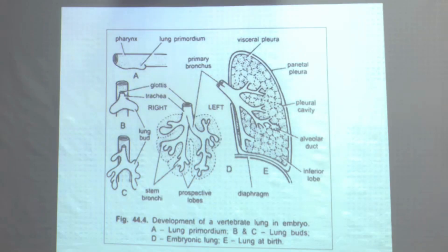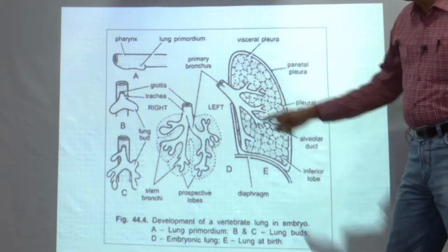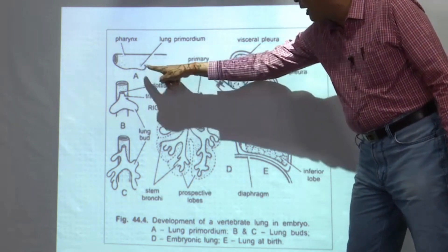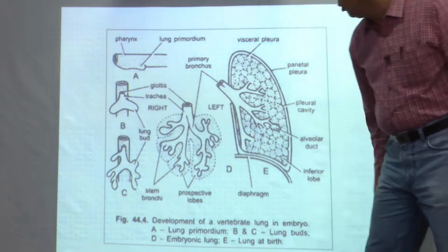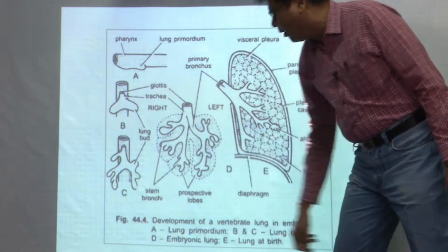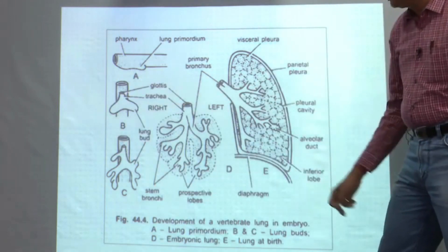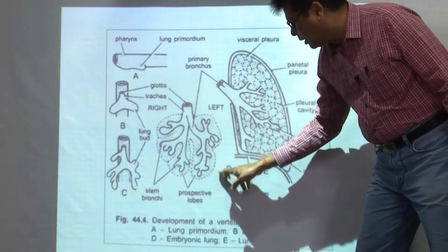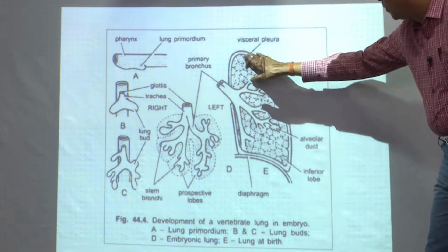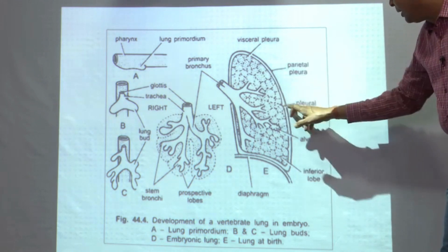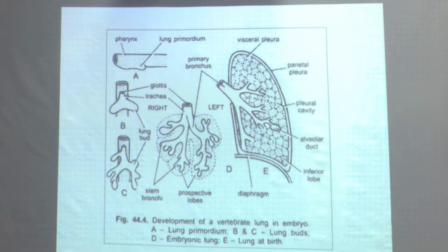Looking at the development diagram: the primitive gut has a pharyngeal region, from which a diverticulum appears — this is the lung primordium. The primordium grows posteriorly and divides into the right and left lobes, which branch to form lung buds. The proximal part becomes the trachea and glottis, which opens into the pharynx. Each lobe further branches to form prospective lobes; ultimately the lung is covered by visceral pleura, with a parietal pleura, pleural cavity, and alveolar ducts.